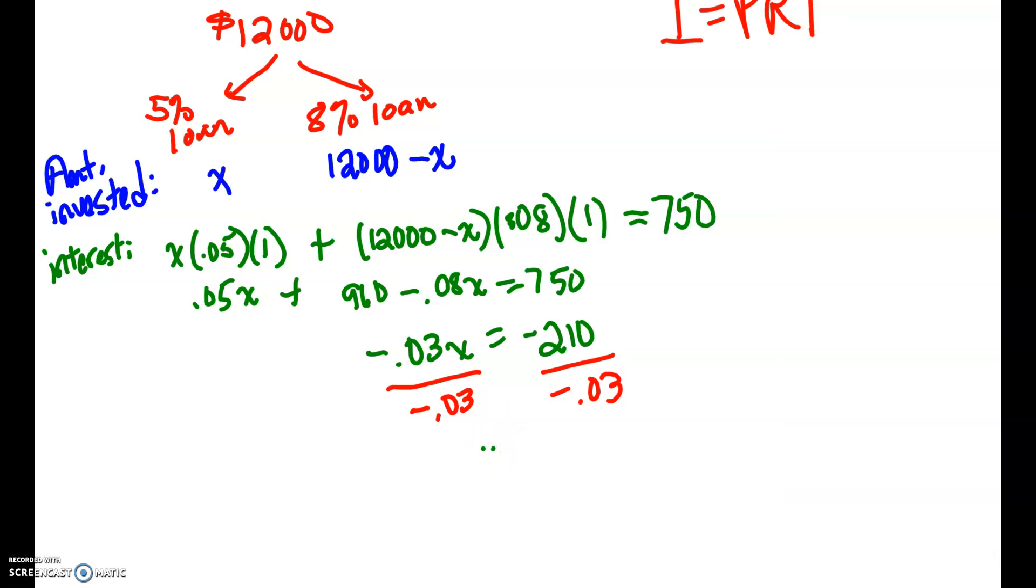So that means x is equal to 7,000. Now, what did we just find? This is where I go back and I look at up here where I have defined my variables. So this means that there is $7,000 borrowed in the 5% loan. And then how do I figure out how much at 8%? I've got my formula right here. 12,000 minus 7,000 would be 5,000 at the 8%. Let me know if you have questions.